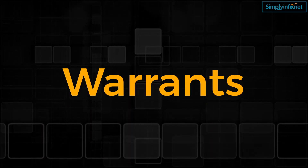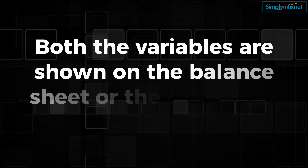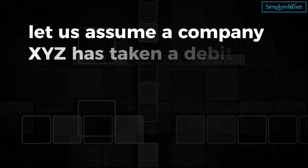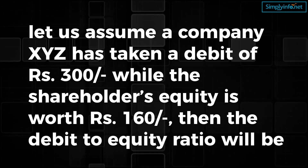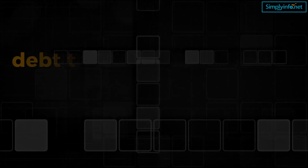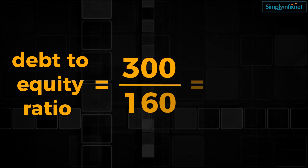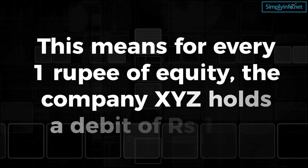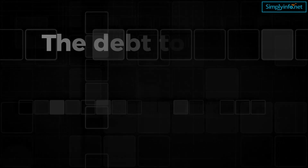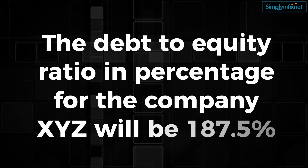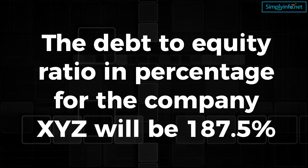Both variables are shown on the balance sheet or the statement of financial position. For example, let us assume a company XYZ has taken a debt of Rs. 300 while the shareholders' equity is worth Rs. 160. Then the debt-to-equity ratio will be 300 divided by 160, which equals 1.875. This means for every 1 rupee of equity, company XYZ holds a debt of Rs. 1.875. The debt-to-equity ratio in percentage for company XYZ will be 187.5%.